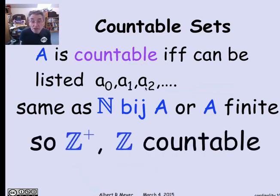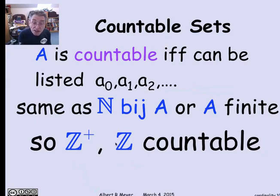What we've just figured out from the previous examples is that the positive integers are countable, and all the integers are countable, because in both cases we exhibited bijections to the non-negative integers.